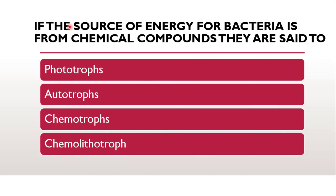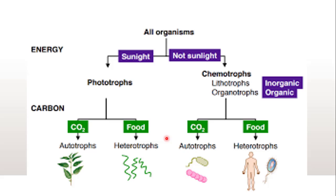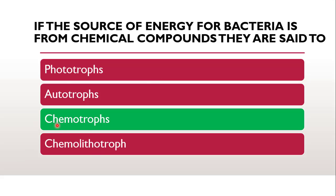Next question: if the source of energy for bacteria is from chemical compounds, they are said to be phototrophs, autotrophs, chemotrophs, or chemolithotrophs? The correct answer is chemotrophs. Organisms that utilize sunlight as the source of energy are called phototrophs, while those that don't require sunlight use inorganic or organic material and are called chemotrophs. Those using inorganic materials are autotrophs and organic materials are heterotrophs — that is chemo-heterotrophs or chemo-autotrophs. So when the source of energy is a chemical compound, they are chemotrophs.